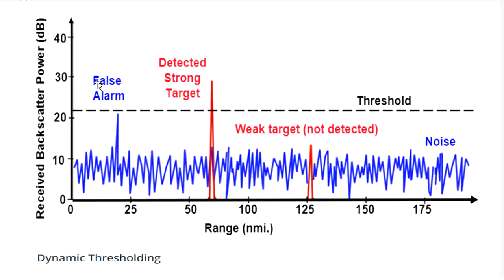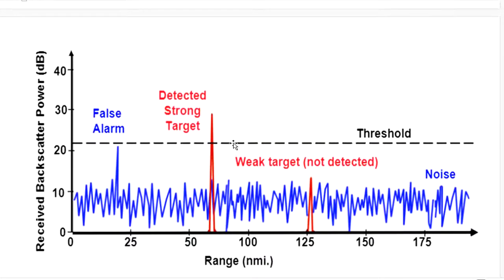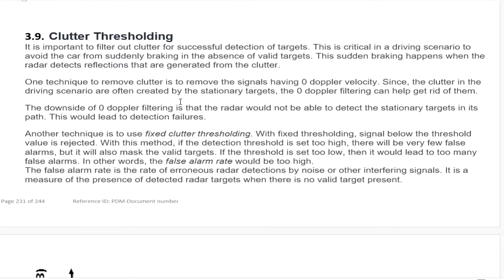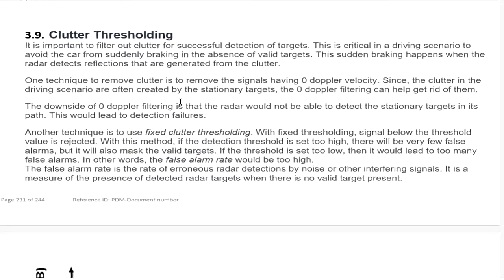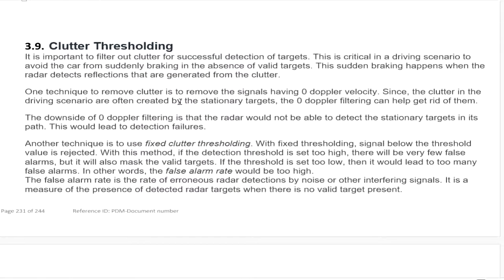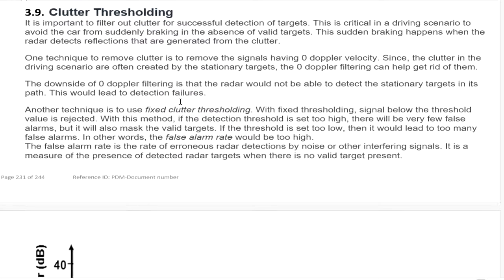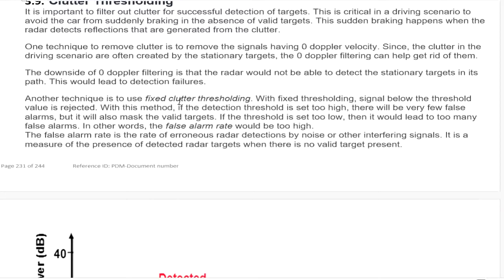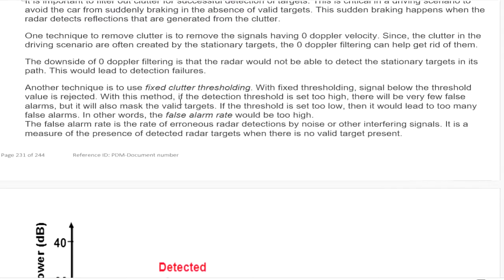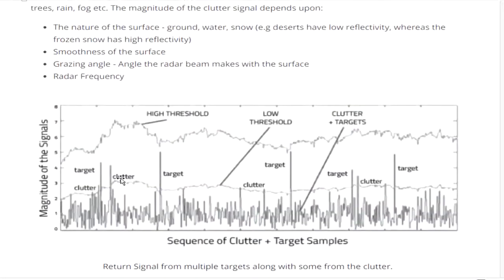Today I want to talk about the noise of the radar, because the signal reflected back to the radar has a lot of noise — not only from the target but also from other objects in the environment. So it's important to filter out the clutter for successful detection of a target. It's critical to handle driving scenarios to avoid the car from suddenly braking in the absence of a valid target. This sudden braking happens when the radar detects reflections generated from clutter.